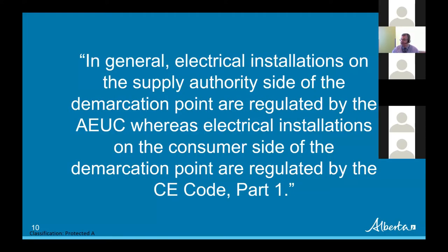One of the things that's come up in our conversations with the Safety Codes Council and their sub-council working groups is trying to clarify the point of demarcation between the utilities and the consumers. A key quote states: in general, electrical installations on the supply authority side of the demarcation point are regulated by the Alberta Electric Utility Code, whereas electrical installations on the consumer side are regulated by the CE Code Part 1, the Canadian Electrical Code Part 1.